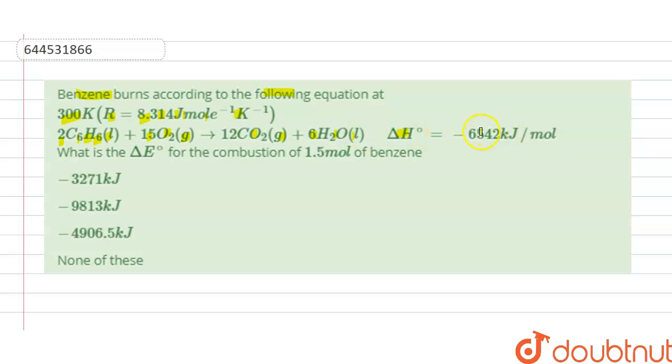Delta H is given to us as minus 6542 kilojoule per mole. We have to find the delta E for the combustion of 1.5 mole of benzene. Options a, b, c, d are given here, so we have to find the correct option.